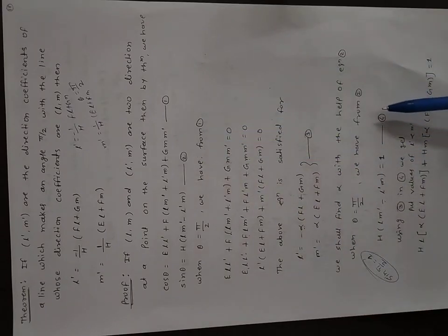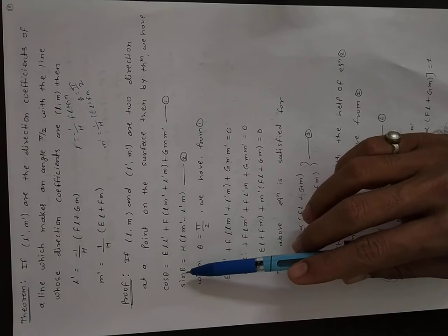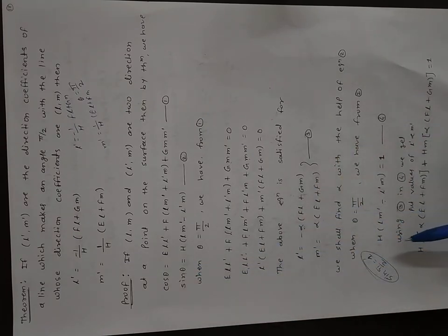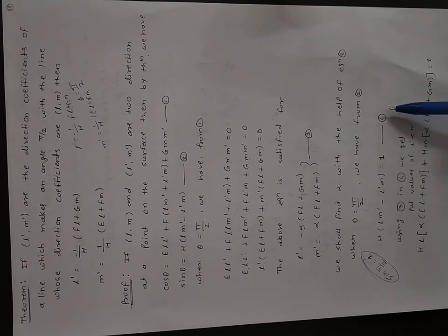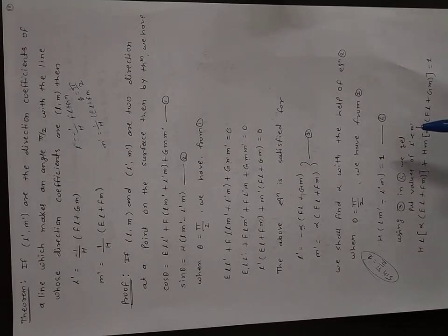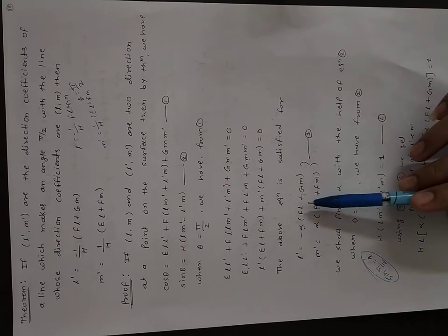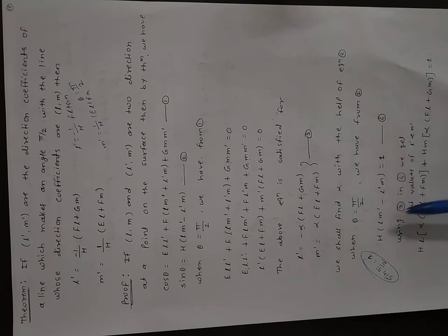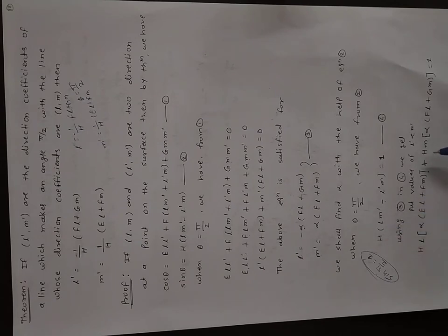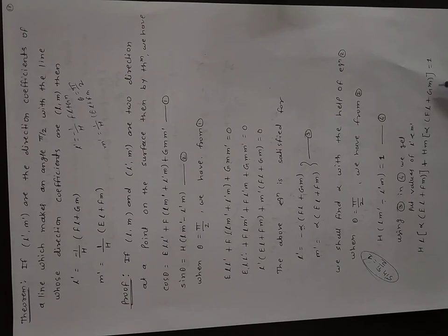From equation 2, when θ = π/2, sin(π/2) = 1, so H(LM' − L'M) = 1 — equation number 4. Using equation 3 in equation 4, substituting the values of L' and M': H·L·α(EL + FM) + H·M·α(FL + GM) = 1, which gives 1/α = H(EL² + 2FML + GM²).